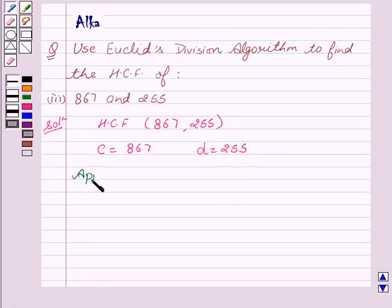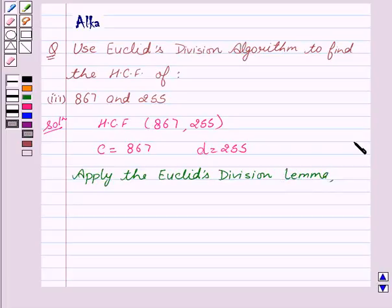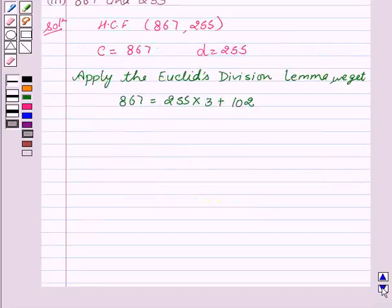Now apply Euclid's division lemma. We get 867 when divided by 255, we get 3 as the quotient and 102 as the remainder. Here we see that R equals 102 is not equal to 0.